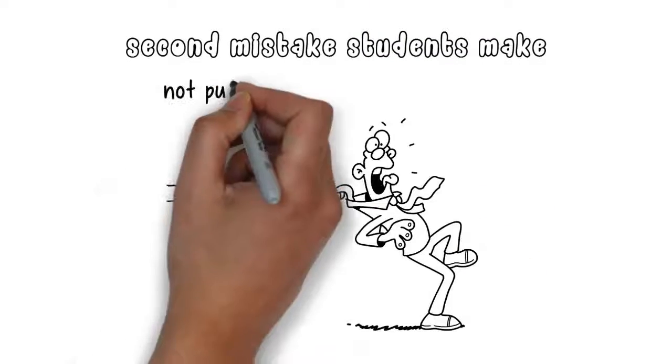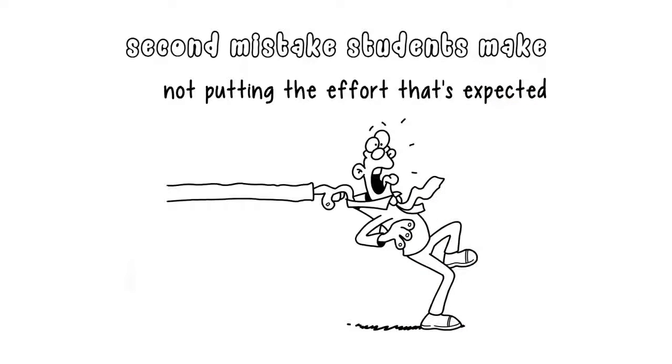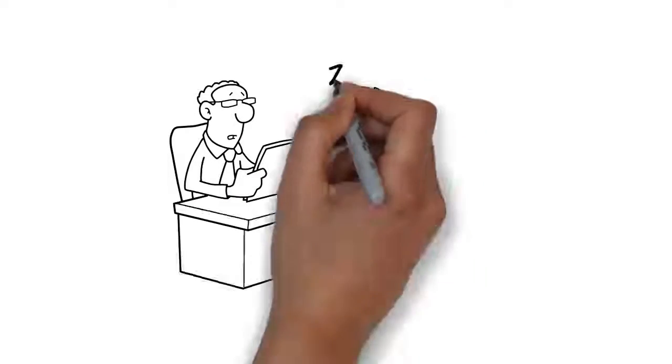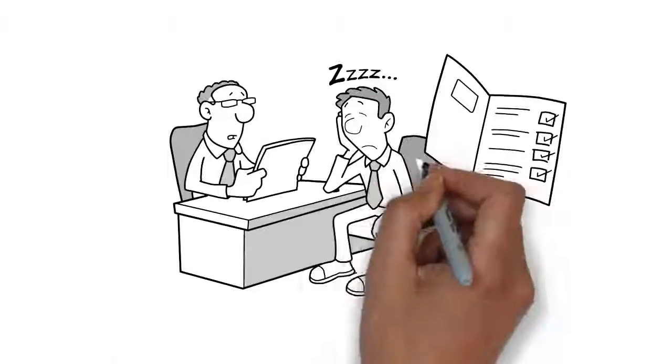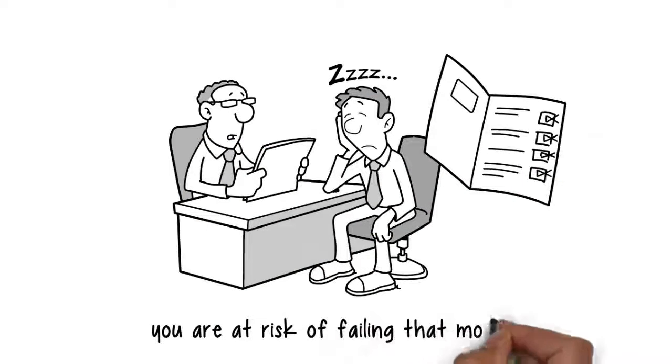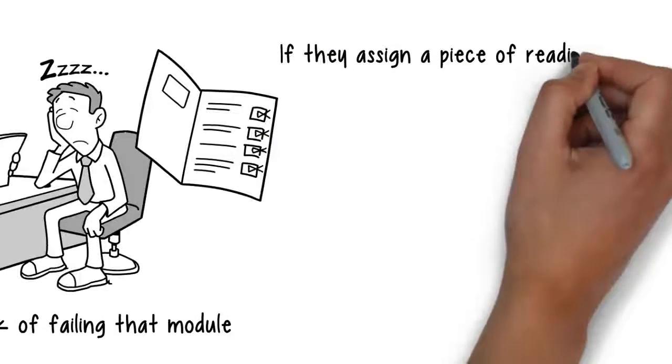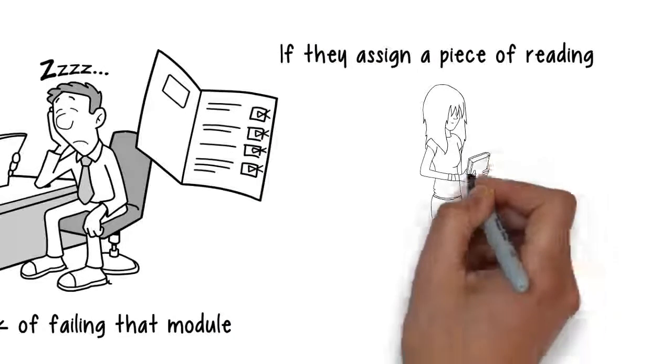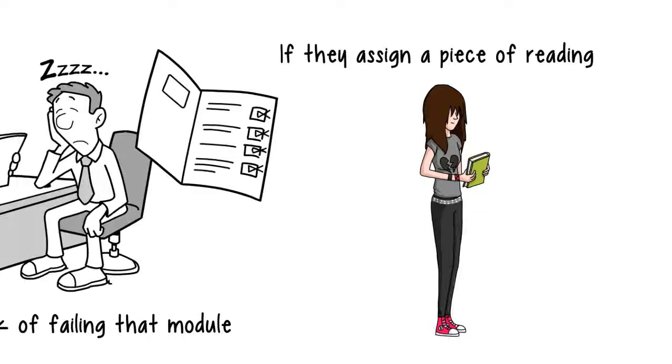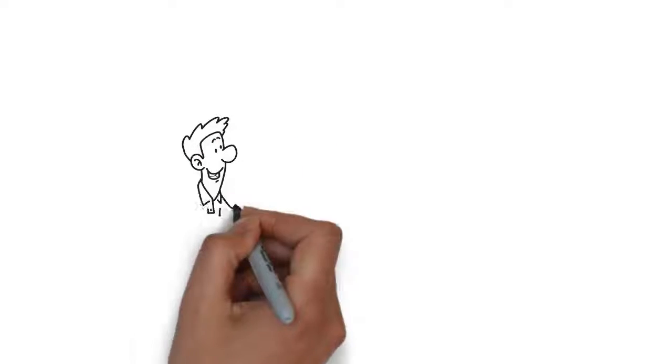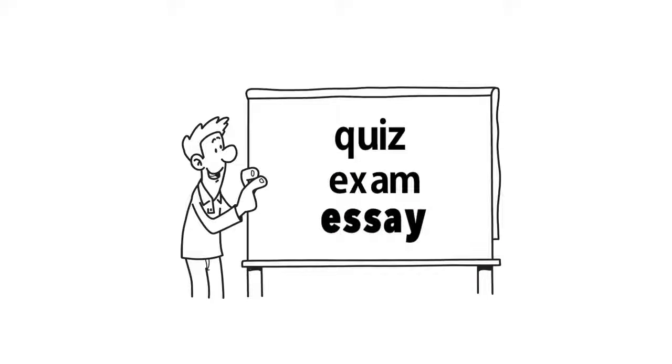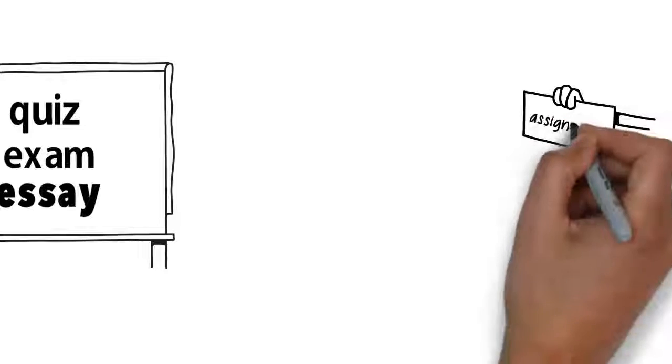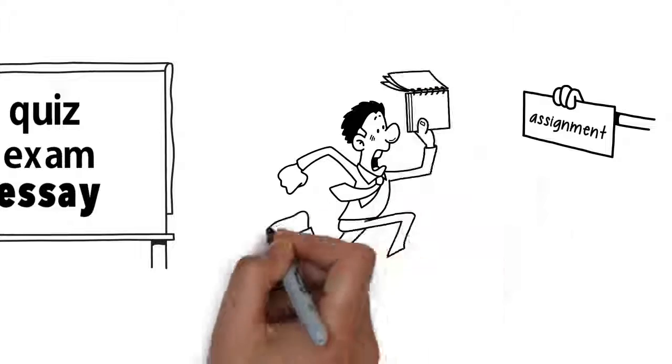So the second mistake students make is not putting in the effort that's expected. Your lecturers and tutors will have certain expectations of you, and if these aren't met and you're not seen to be trying, you are at risk of failing that module. If they assign a piece of reading, they'll expect you to do it ready for the next lecture. If it's not being discussed in the next lecture, it could be in a quiz, exam, or essay. When they set an assignment, they'll expect you to do it and submit it on time.